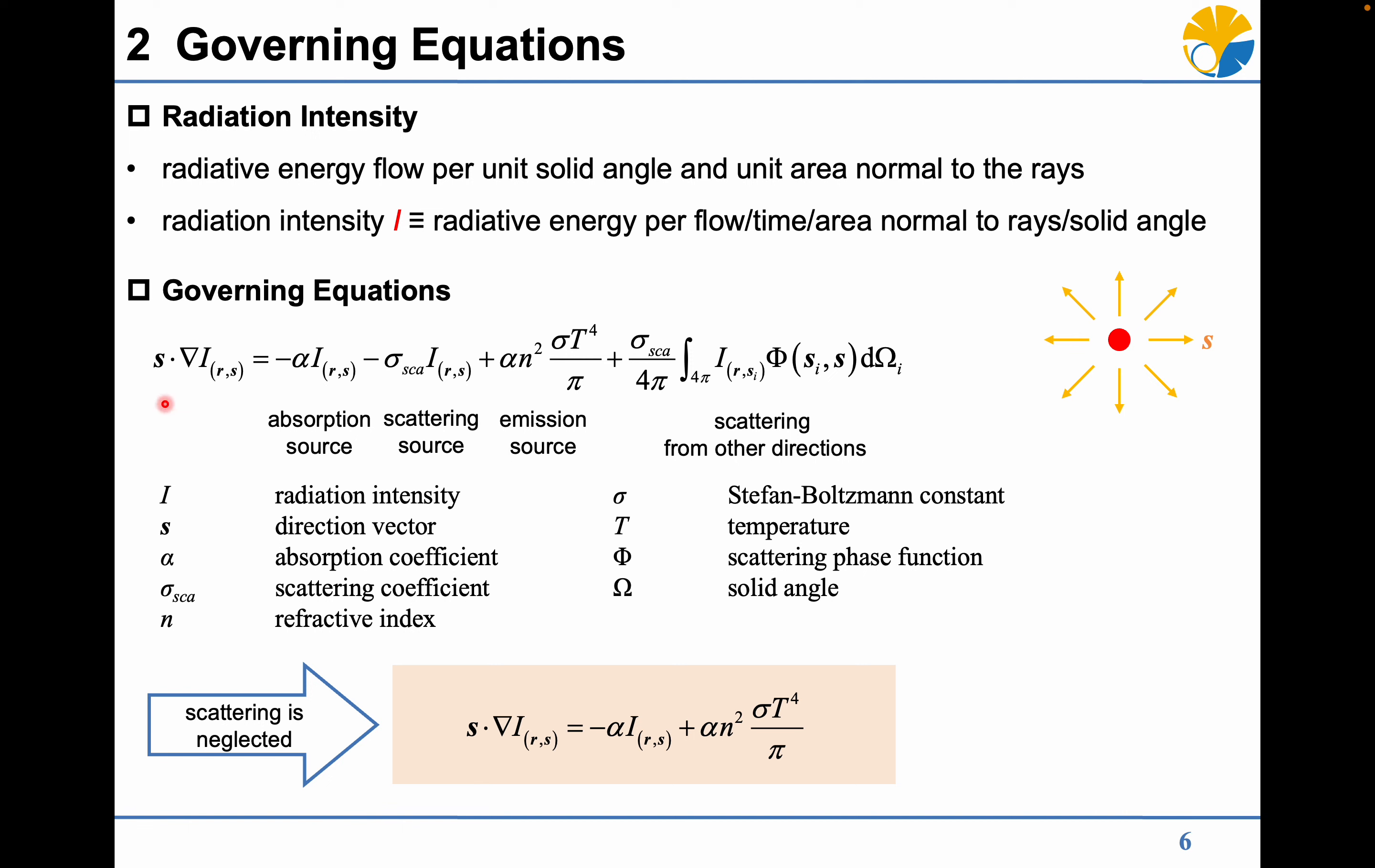The general form of radiative transfer equation can be written in this form, where the diffusion of radiation intensity results from absorption, emission, and scattering effects. In the present study, the scattering effect is neglected so that the radiative transfer equation can be simplified into the following form.